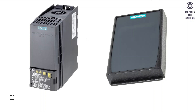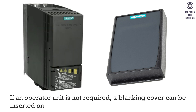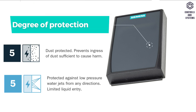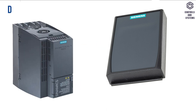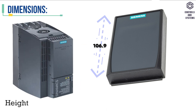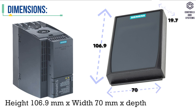Blanking cover: if an operator unit is not required, a blanking cover can be inserted on the Sinamics G120P inverter. Degree of Protection is IP55. Weight is 0.13 kg. Dimensions: Height 106.9mm, Width 70mm, Depth 19.7mm.